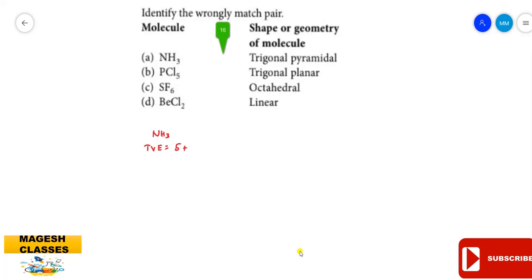For NH₃, the total valence electrons are 5 from nitrogen and 3 from 3 hydrogen atoms, totaling 8. This total valence electron count is divided by 2 in the next step. First step: calculate the total valence electrons. Second step: divide the total electrons by 2; if the total exceeds 8, divide by 8 instead.